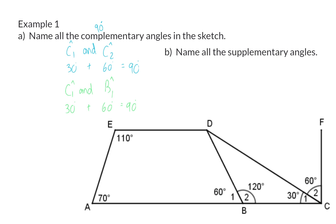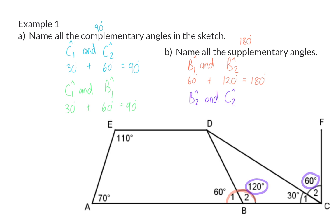Name all the supplementary angles. Supplementary means two angles adding up to 180 degrees. Starting with the two angles at point B: angle B1 and angle B2 are supplementary, because 60 degrees plus 120 degrees gives us 180. Similarly, we can take the 120 from angle B2 and add angle C2 of 60 degrees to also get 180, which means B2 and C2 are also supplementary. These two are not adjacent supplementary angles, but still supplementary. Finally, angle A is 70 degrees and angle E is 110 degrees, which also add up to 180, so they are supplementary angles.